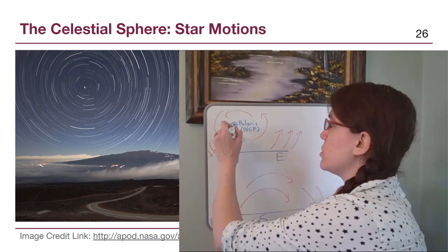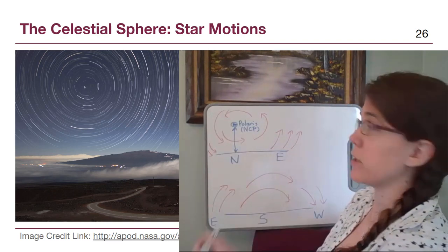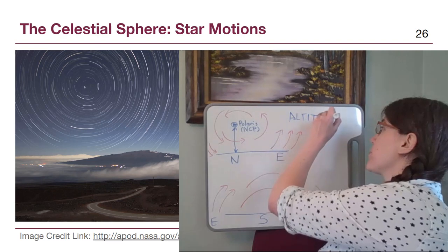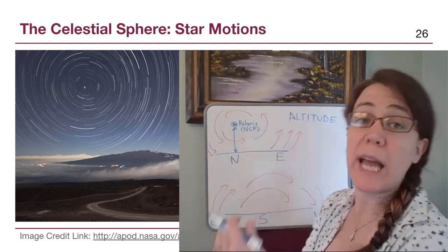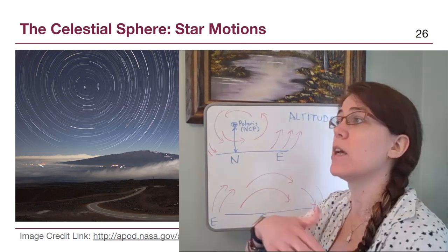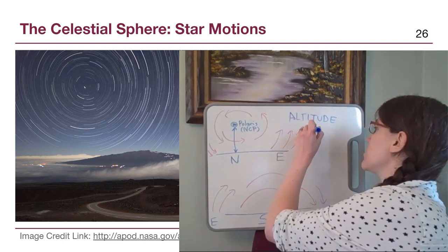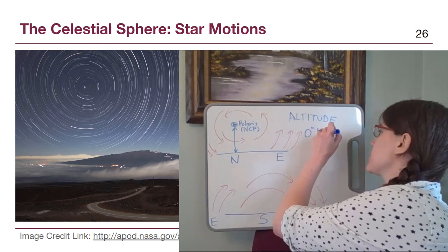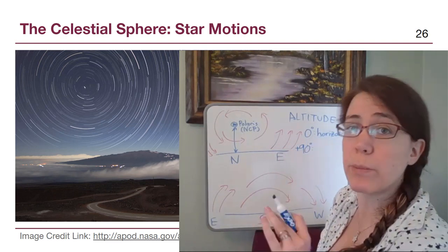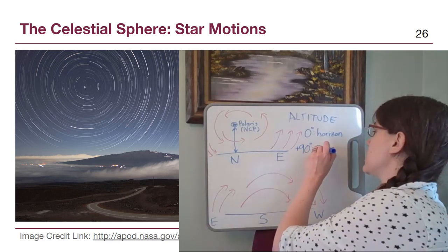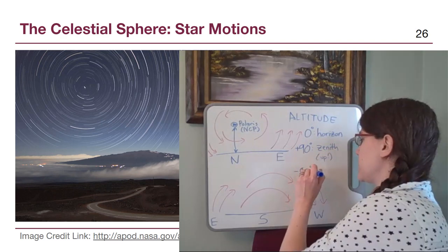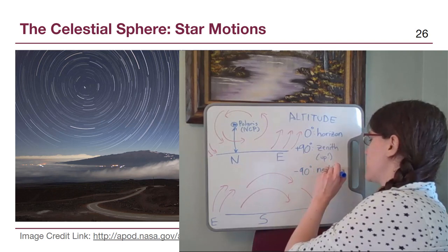There is a term we can use to describe how high above the horizon the North Star is, and that term is the altitude. The altitude is the height as an angle above the horizon. We're using this in a very specific astronomy context. Zero degrees altitude means we are on the horizon. Positive 90 degrees means we are directly up, which is the zenith. And negative 90 degrees means nadir, or directly down.